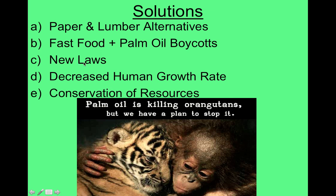Creating stricter laws on how we build cities and how much forest is destroyed is critical, and laws against burning forests are really important right now. Decreasing the human growth rate would also help — we wouldn't need such large cities if there were fewer people. Slowing population growth will help with both of these topics, and just being more conservative with our resources: if we are going to have big cities, let's create less pollution, waste less water, and treat our resources with respect for future generations.